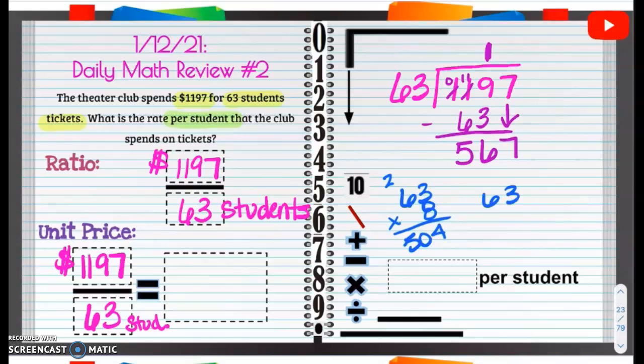Let's try 63 times 9. Let's try that. 9 times 3 is going to be 27. 9 times 6 is going to be 54 plus 2, 55, 56. Woohoo! 567. It goes in 9 times. Yay!